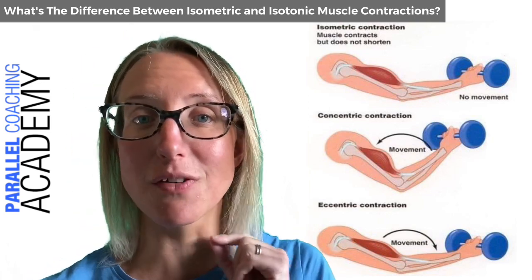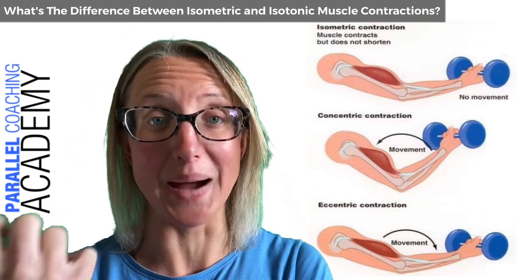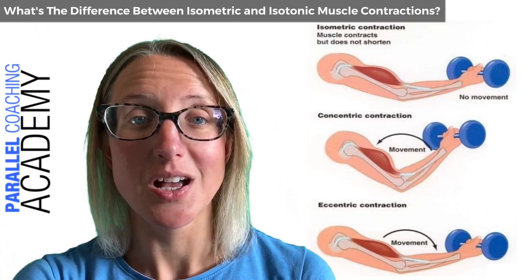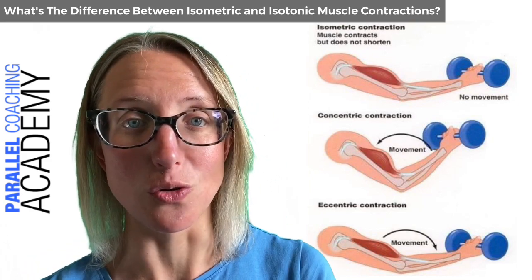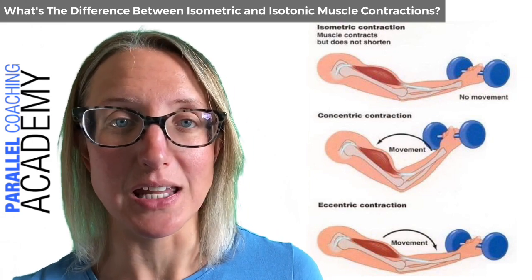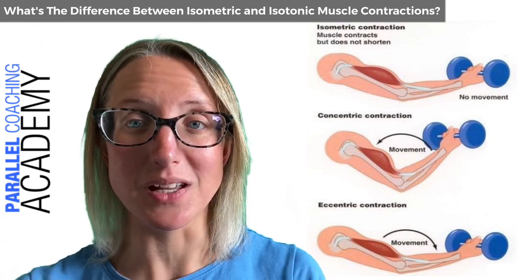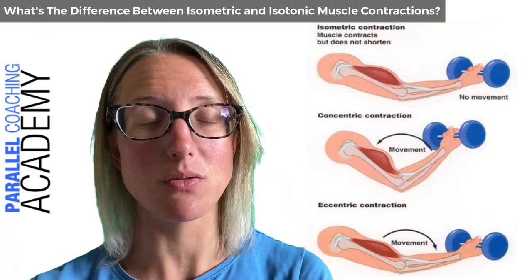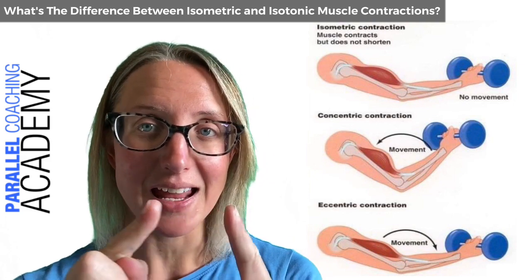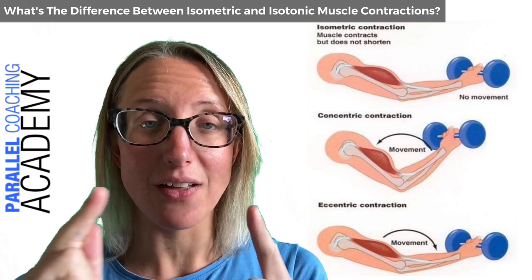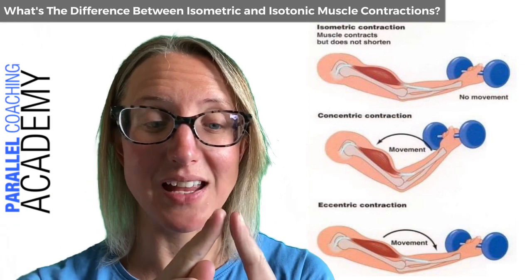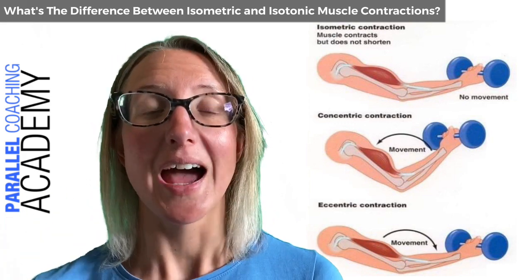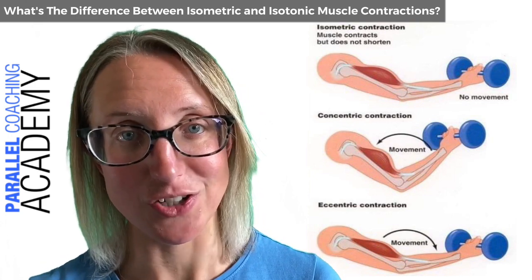When you reverse the dumbbell back down, you don't use a different muscle — you still use the same muscle, but you eccentrically contract it. The muscle is still switched on, still holding the weight of the dumbbell, but you lengthen it out as you take the insertion back away from the origin again. That's your eccentric contraction.